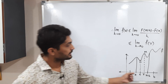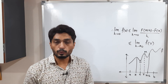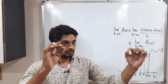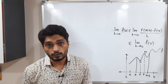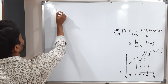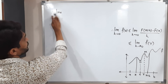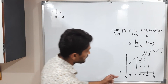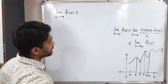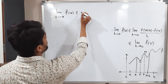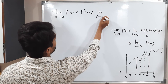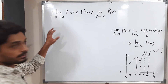As h → 0, x + h → x, and since u and v are sandwiched between x and x + h, both u and v also move towards x. Therefore, lim(h→0) f(u) = f(x) and lim(h→0) f(v) = f(x).